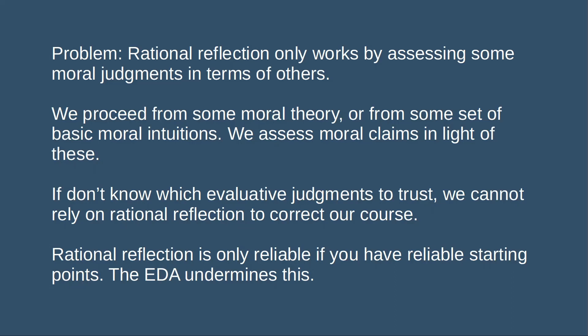The point is that if we can't trust our evaluative judgments, then we can't trust rational reflection to correct our course. It's a garbage-in, garbage-out problem. Rational reflection works with some evaluative judgments, and if you can't trust them, then you can't trust that it's going to get you to the truth. It may be that all our reflection over the ages has just been a process of assessing evaluative judgments that are mostly off the mark in terms of others that are mostly off the mark. Rational reflection is only reliable if you have reliable starting points, but the evolutionary debunking argument undermines our confidence in those starting points.